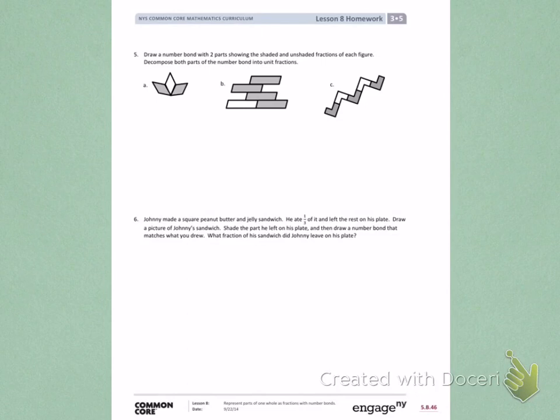Number 5. Draw a number bond with two parts showing the shaded and unshaded fractions of each figure. Decompose both parts of the number bond into unit fractions.